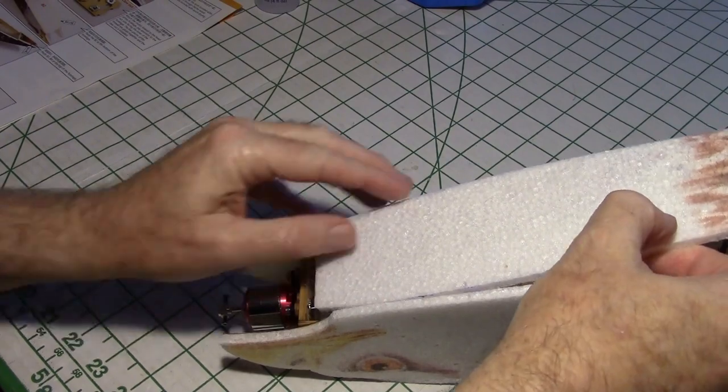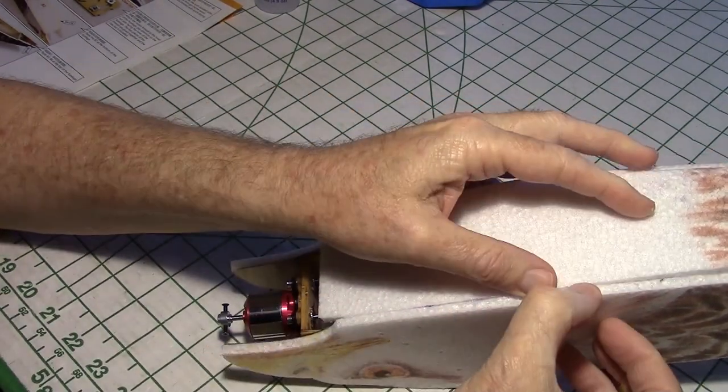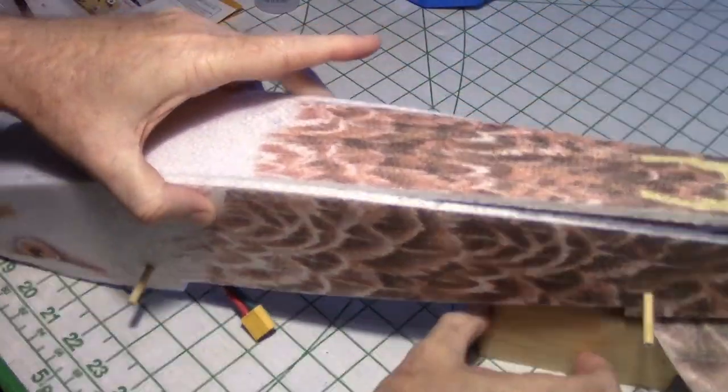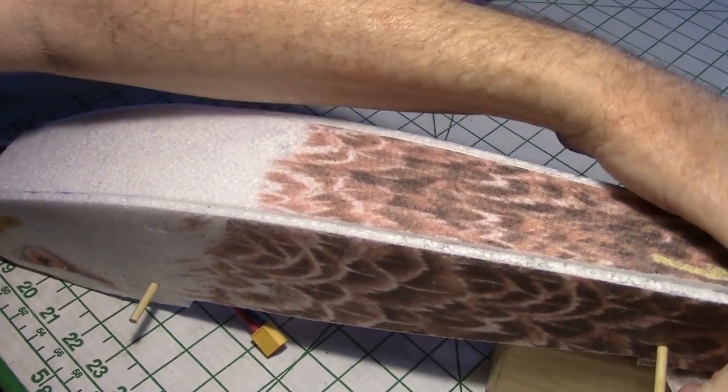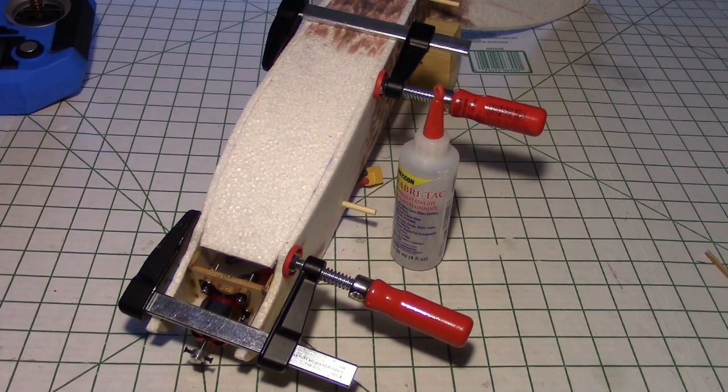Once it's tacked up, put it back in place the way you had it and press all the sides together against the plate again. Make sure it looks even all the way down. And then put some clamps on it and let it dry.